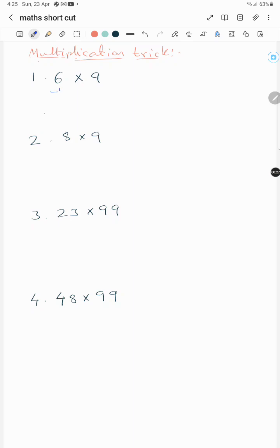The same way, subtract 1 from 8, you get 7, and subtract this 7 from this, you get 2, and your answer is 72. Subtract 1 from this, this is 22, subtract this 22 you will get 77, and the answer is 2277.